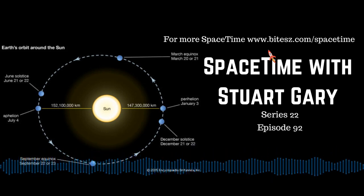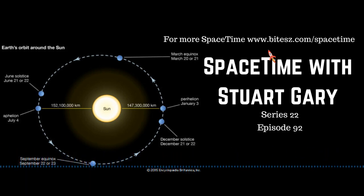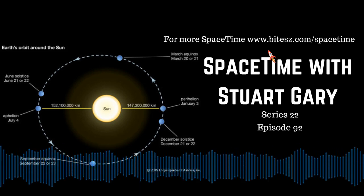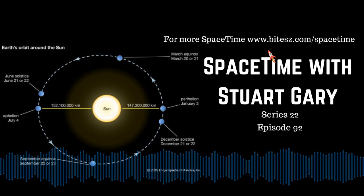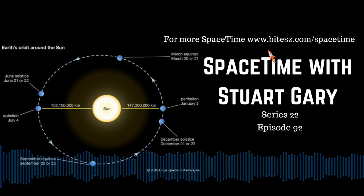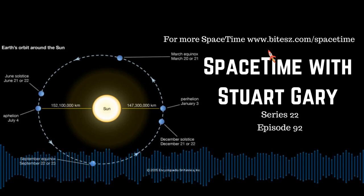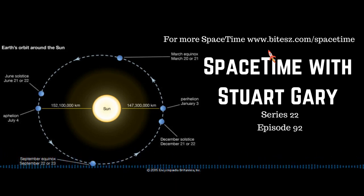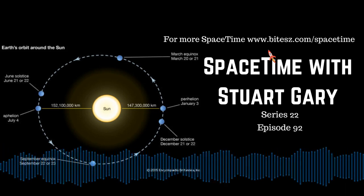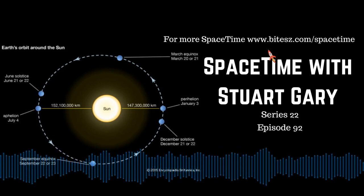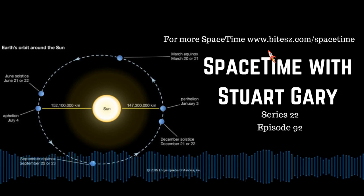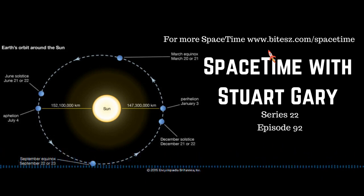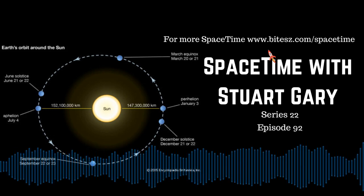The final telemetry readings show Vikram's vertical velocity was 58 metres per second, or 210 kilometres per hour, at an altitude of about 330 metres. That's unusually fast, considering the ideal touchdown velocity was meant to be about 2 metres per second, or 7.2 kilometres per hour — suggesting something had already gone fatally wrong. Despite numerous attempts, no further contact was made with the lander or its rover. India's Failure Analysis Committee later concluded the crash was most likely caused by a software glitch.